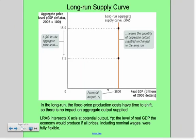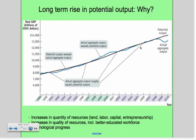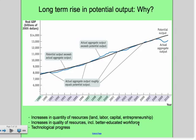Over time, there has been a long-term rise in potential output. You can see it here — potential is the black line and actual aggregate output is the blue line. There are three reasons: number one is the increase in the overall quantity of resources available — land, labor, capital, and entrepreneurship. The second is the increase in quality of those resources, including a better educated workforce. And the third is technological progress, which allows us to do far more in 2010 than even in 1989-1990.